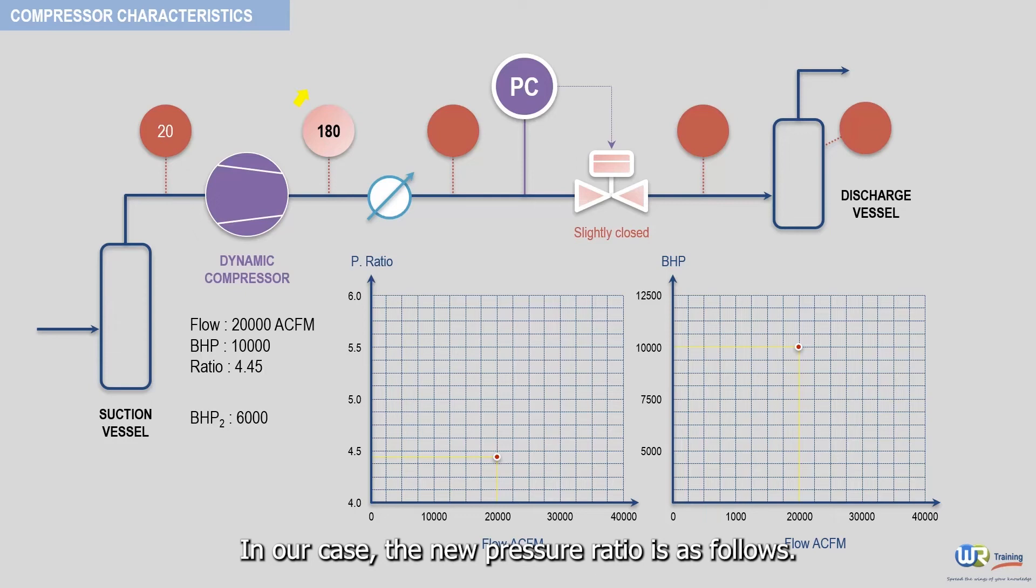In our case, the new pressure ratio is as follows: it is equal to 5.61. The new operating points, flow versus pressure ratio and BHP, are now plotted on the appropriate graphs.